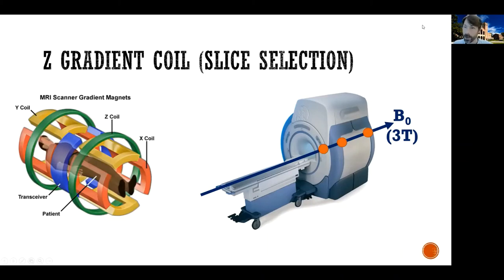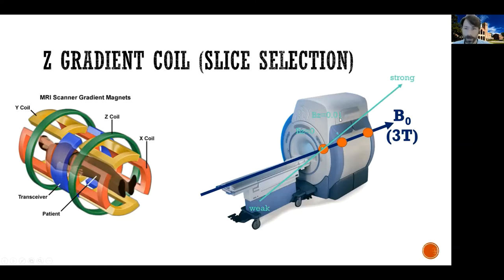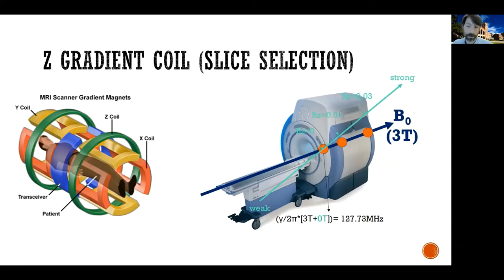The Z gradient coil creates a new magnetic field that might be weaker at one end — towards the feet — and stronger at the other end, towards the top of the head. Let's say this new field, which adds on top of B0, has a strength of zero here, 0.01 Tesla at the next point, and 0.03 Tesla further up — these numbers are made up, just to help with the example. So the first proton resonates at gyromagnetic constant over 2π times 3 Tesla plus 0, giving 127.73 megahertz.